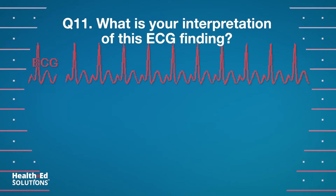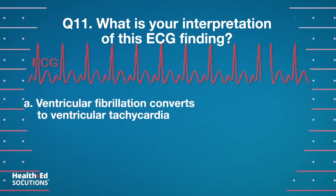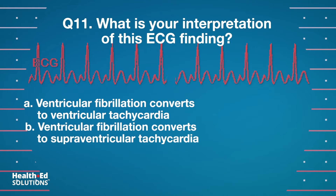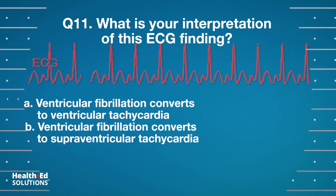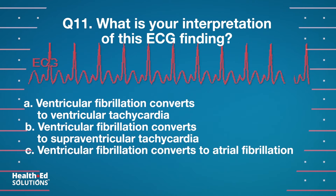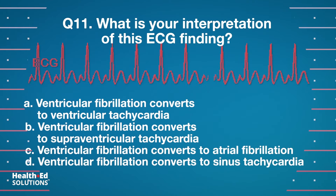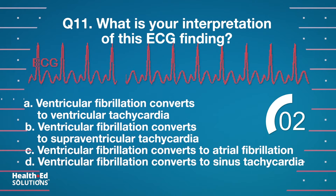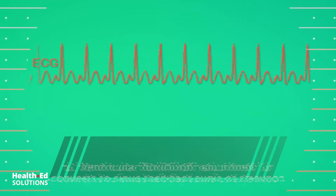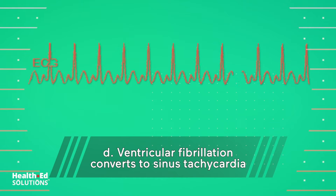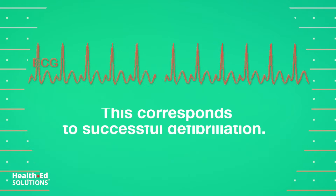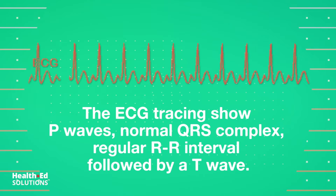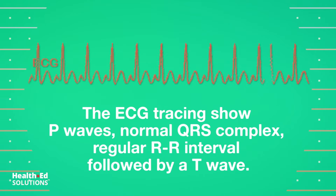A. Ventricular fibrillation converts to ventricular tachycardia. B. Ventricular fibrillation converts to supraventricular tachycardia. C. Ventricular fibrillation converts to atrial fibrillation. D. Ventricular fibrillation converts to sinus tachycardia. Correct answer D: Ventricular fibrillation converts to sinus tachycardia. This corresponds to successful defibrillation. The ECG tracing shows P waves, normal QRS complex, regular RR interval, followed by a T wave.